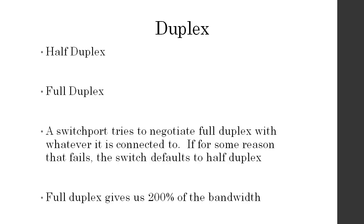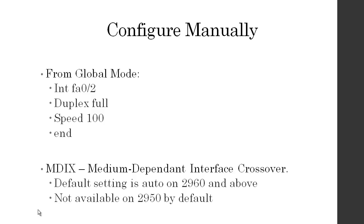That's why it's important to set things manually rather than relying on auto-configuration. Full duplex gives you 200% of the bandwidth — you can send and receive at the same time. On a gigabit port that's 2,000 Mbps. On a 24-port CAT6 switch that's 24,000 times 2, so you need 48,000 Mbps through the switch backplane if everyone runs full speed simultaneously. To configure manually from global mode: interface FA0/2, enter, duplex full, enter, speed 100, enter, end. Your options are full, half, and auto — default is auto.